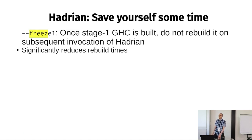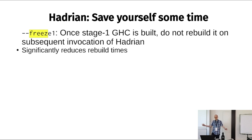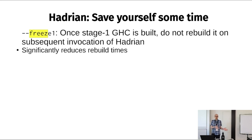Some other tips to save build time. The --freeze1 flag is really handy: once you've built GHC and rebuild after a change, it tells Hadrian not to rebuild stage one and to just use the existing stage one for subsequent rebuilds. This takes a fraction of the time compared to rebuilding both stage one and stage two.